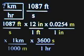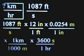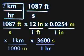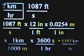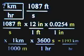Everything highlighted in yellow is canceling, and we're left with a final answer in units of kilometers per hour. Now all we have to do is the numerical part: multiply 1,087 × 12 ÷ 1 × 0.0254 ÷ 1 × 1 ÷ 1,000 × 3,600 ÷ 1. The final answer, rounded to four significant figures because 1,087 has four significant figures — zeros in the middle of a number are captive zeros and always count as significant figures — is 1,193 kilometers per hour.